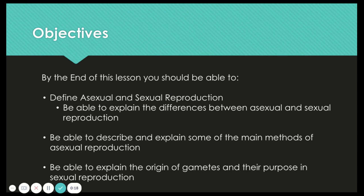By the end of this lesson, there are a couple of things you should be able to do. The first thing is define asexual and sexual reproduction. You should also be able to explain the differences between them and why those differences are important. You should be able to describe and explain some of the main methods of asexual reproduction. There are many other methods that we won't necessarily be discussing, but there are a couple of main ones you should understand. And be able to explain the origin of gametes and their purpose in sexual reproduction.